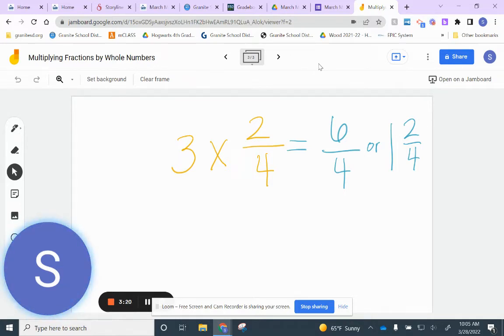Now, if you chose to do it the other way, where you do three over one times two over four, or two fourths, you will see that you get three times two is six, and you get one times four is four. So either way, the correct answer is six fourths, whether you did it this way, or you did it this way. And if you were able to change your improper fraction into a mixed number, then you got one and two fourths, or one and a half, if you're that great at fractions.